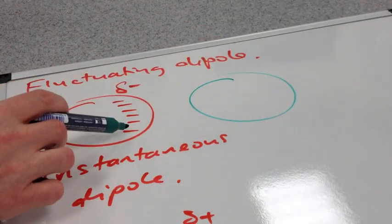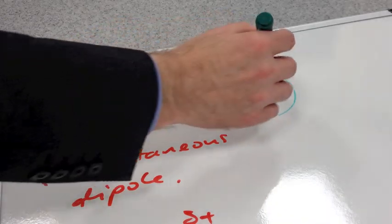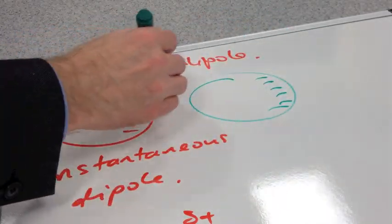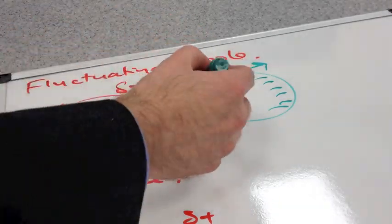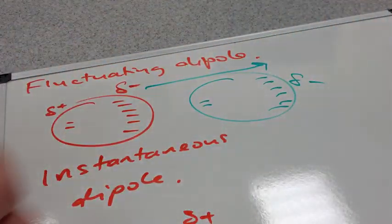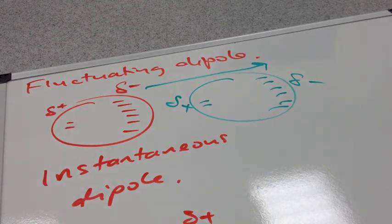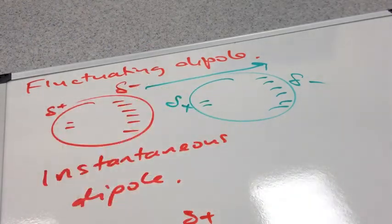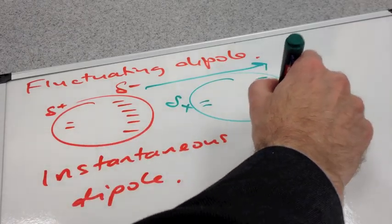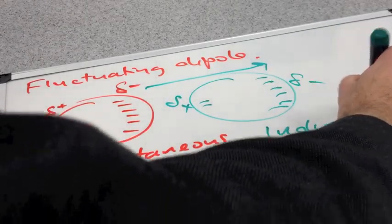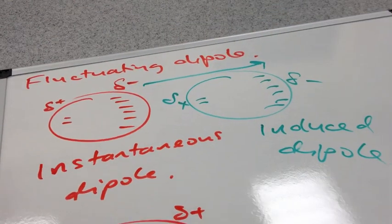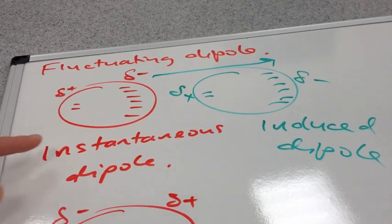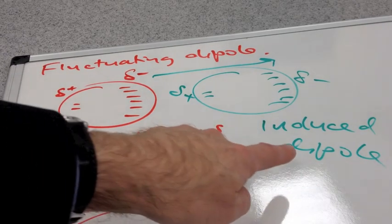Well, we've got a slightly negative end here. The negative electrons will be repelled, so they'll be pushed that way. And so it puts a dipole into the neighbouring molecule, so again that end would be slightly negative, and this end would be slightly positive. Now, because this dipole's been forced, we call this an induced dipole.